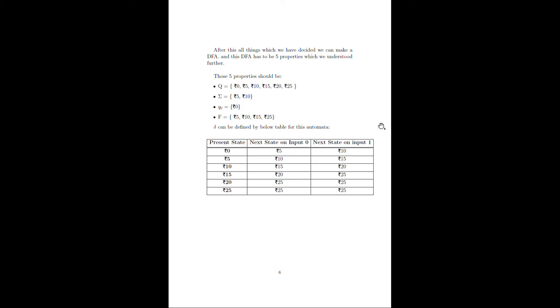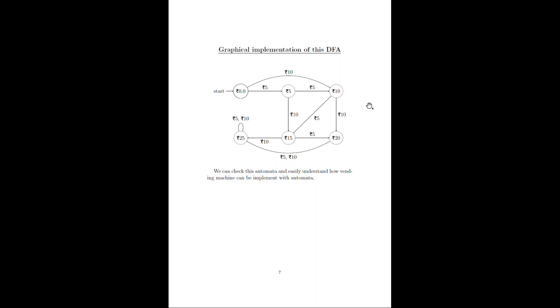Now graphical implementation of this DFA: the state diagram for this DFA will be shown. As we start, it will show zero rupees. If we enter 5 rupees, then it will go to the 5 rupees state which may be our final state. Or else, if we give 10 rupees, then it will go to the 10 rupees state which can be our final state or may not be.